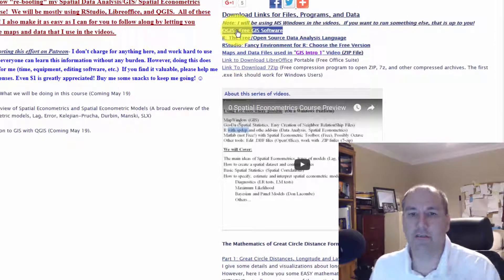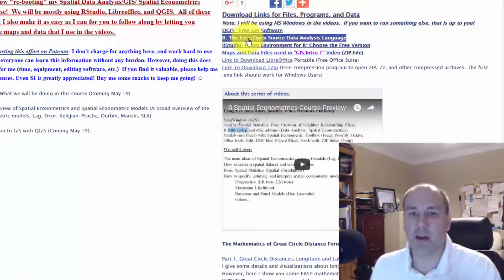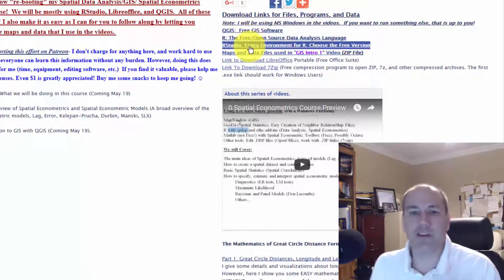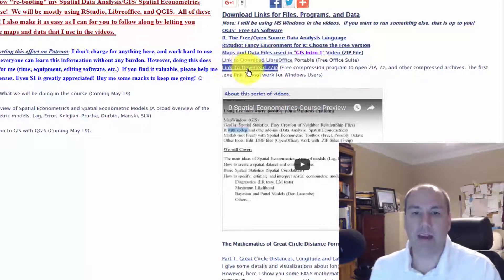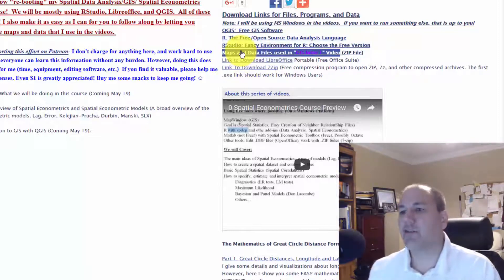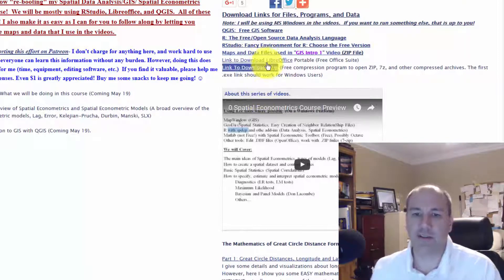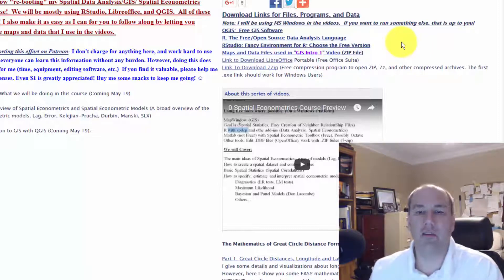So QGIS, link to download that free GIS program here, download R, then download RStudio, which is kind of an environment that makes working in R much more pleasant, and some maps and data files that I used in my first QGIS video. And here are some other links to 7-zip if you need a good program to work with zip files, and a LibreOffice download link in case you want to use that for working with comma-separated values files and editing database files.